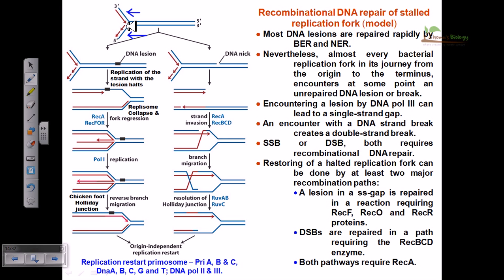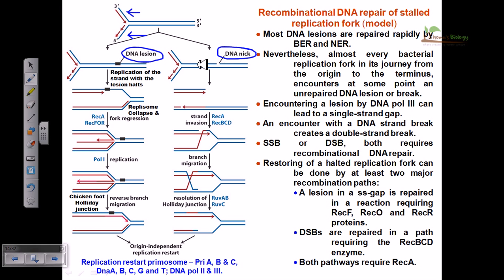After some time, what can happen? Chemical or radiational damage can occur in the DNA. As a result, we can find DNA lesion formation or DNA nicks. A lesion consists of extra nucleotide sequences which are bulging out. A nick is a loss of nucleotide sequences in some region or segment of the DNA. Both of them can lead to the stalling of the replication fork, because the replication fork cannot pass through any kind of DNA lesion or DNA nick unless they are treated.